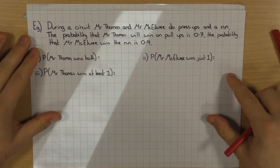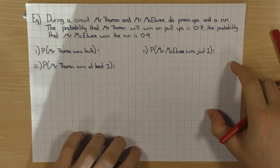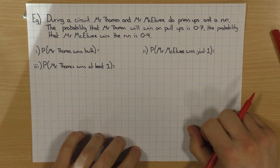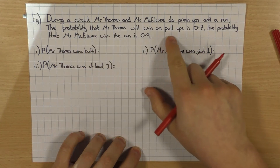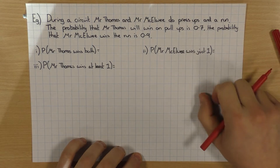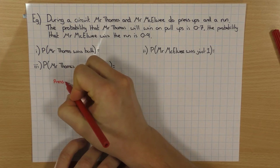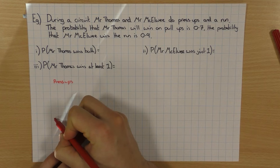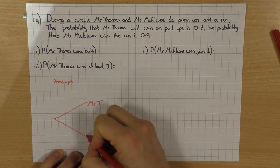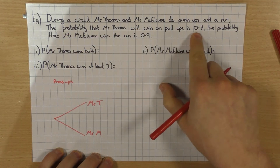With that last one we had fractions. Now let's do an example where we have decimals — the method is still exactly the same. During a circuit, Mr. Thomas and Mr. McKelvey do press-ups and a run. The probability that Mr. Thomas will win on press-ups is 0.7, and the probability that Mr. McKelvey wins the run is 0.9. So I've got two events: press-ups and a run. For press-ups, Mr. T could win or Mr. McKelvey could win, and the probability for Mr. Thomas is 0.7.